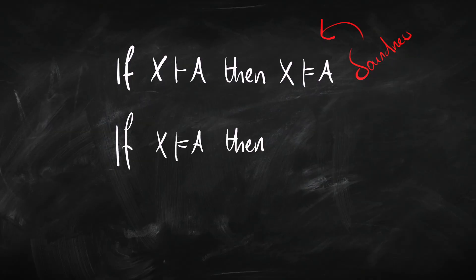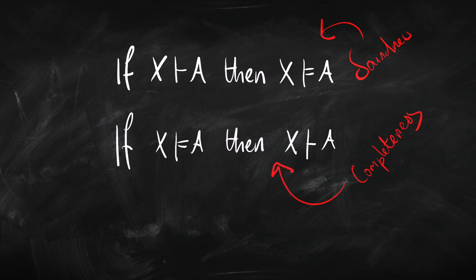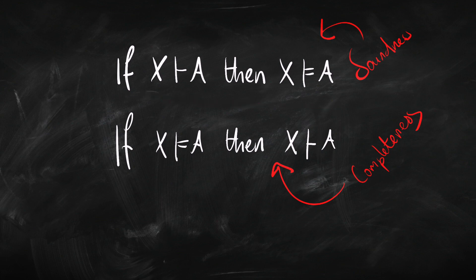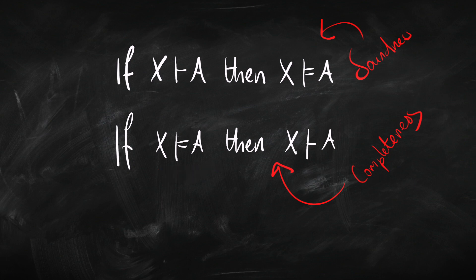This statement here is basically very similar but going the other way around. If we've got a genuine entailment from some premises to a conclusion, then we can prove it. Whereas soundness says that anything we prove is a genuine entailment, completeness says if we've got a genuine entailment, then we can prove it. Completeness is our guarantee that our proof system does enough — it captures all the entailments out there. Whereas soundness is telling us that if we get a result from our proof system, then it's a true one — a genuine entailment.